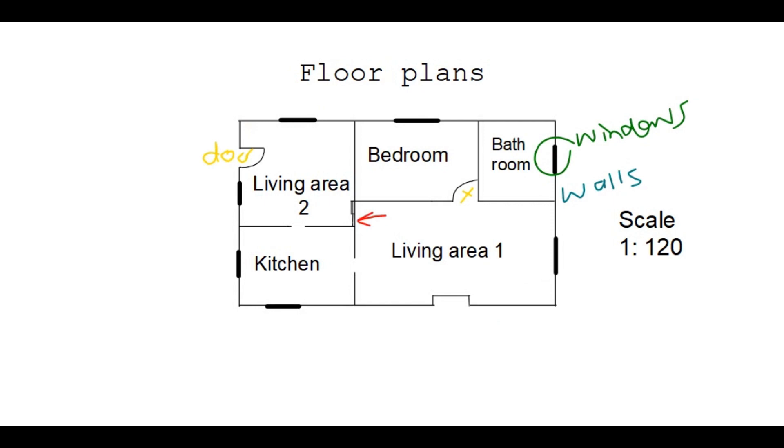We also have a door here and here and this would be a sliding door. Now when you look at the scale, you'll see that we have one unit. Now this can be centimeters, meters, kilometers, anything.